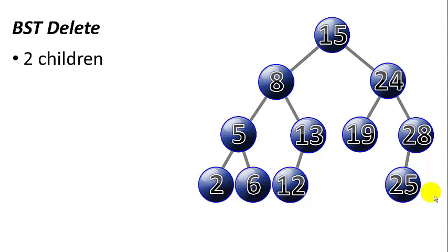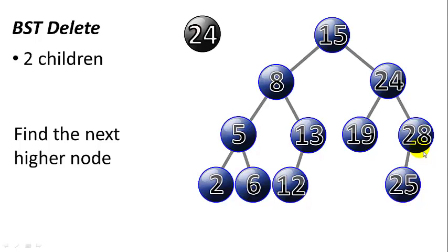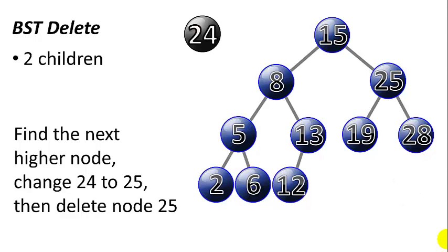Now, if we want to do a delete operation with two children, let's say we want to delete node 24, which we can see has a left child and a right child. We find the next higher node. We look at node 24, we follow the right subtree, node 28, and then we look at left child and left child, continue down the left-most path until we get to the bottom. In this case, there's only one edge to node 25. That is the next highest node from 24. In this case, we can change the 24 to 25 and delete node 25.